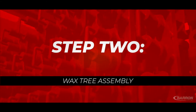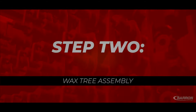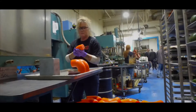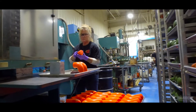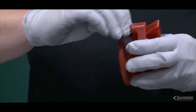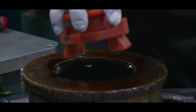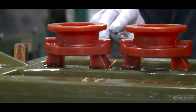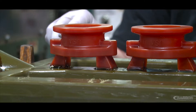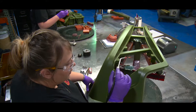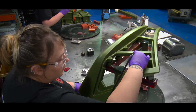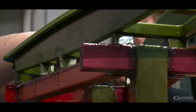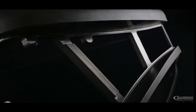Step two: wax tree assembly. Because it is uneconomical to make small parts one at a time, wax patterns are typically attached to a wax tree or sprue. The wax between the patterns and the sprue are called gates. These solid wax branches also guide molten metal in the casting operation to form each final product.